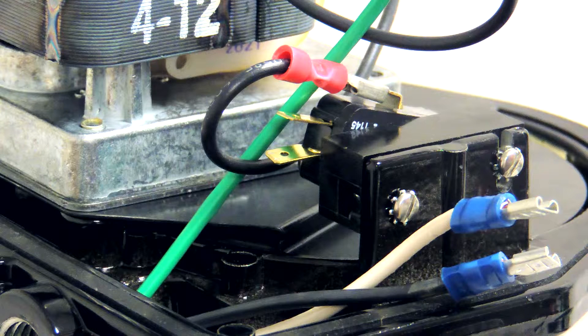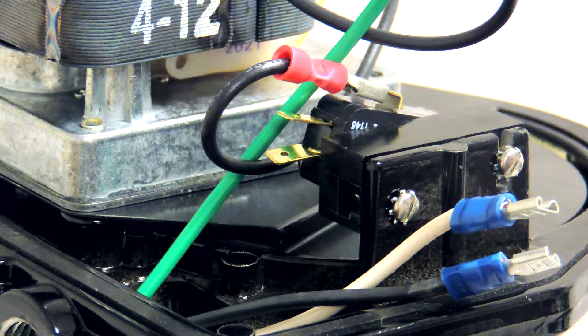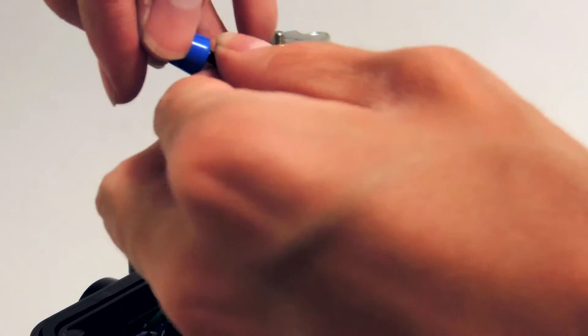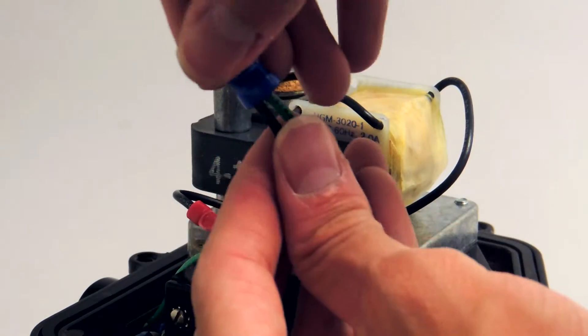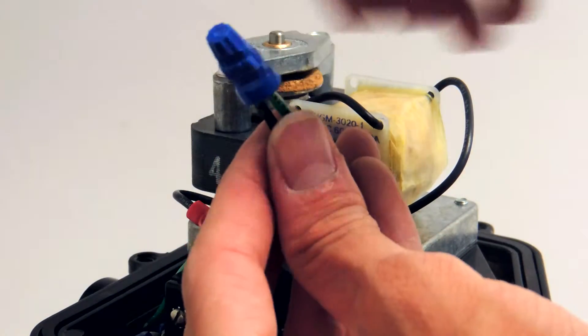Make sure the motor wire with a female connector is attached to the top connector of the switch. Crimp the green wire to the free motor wire using the included wire crimp cap.